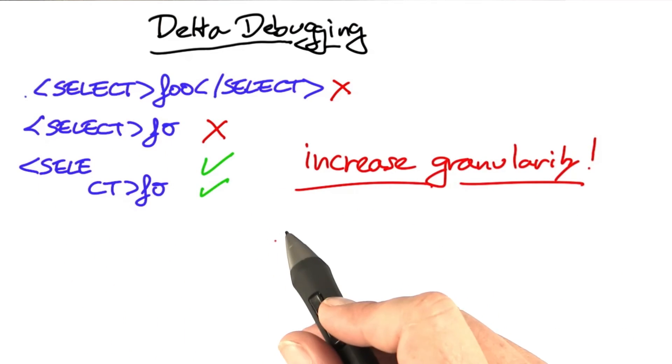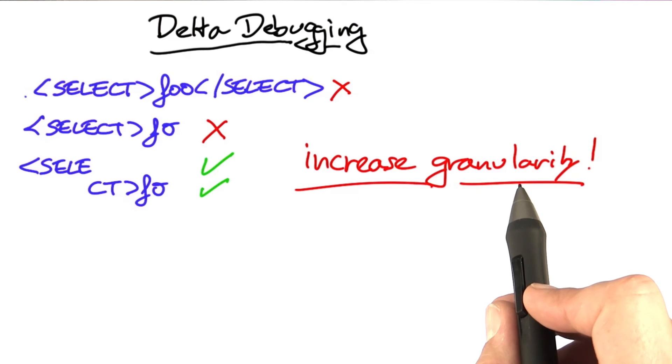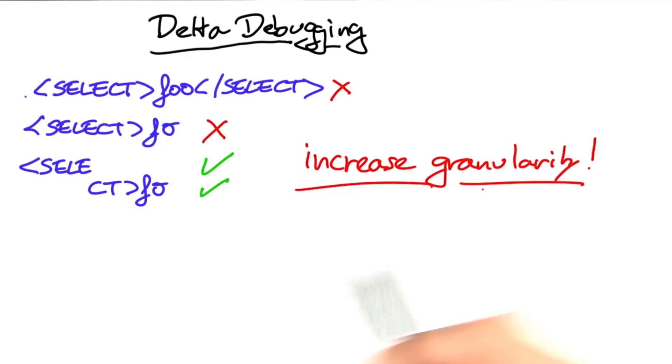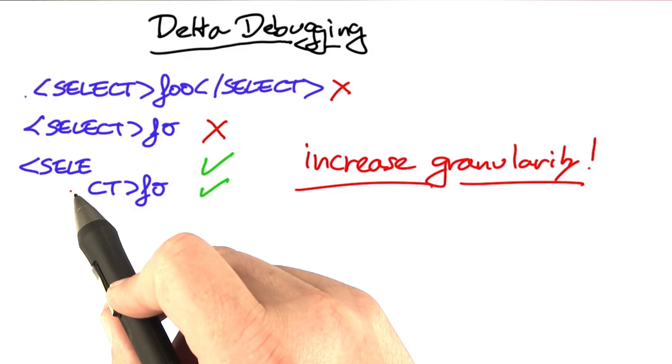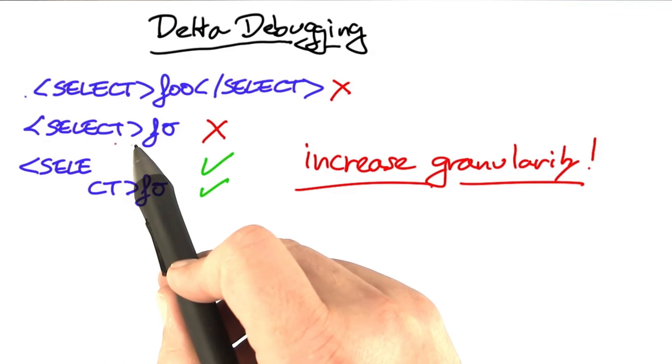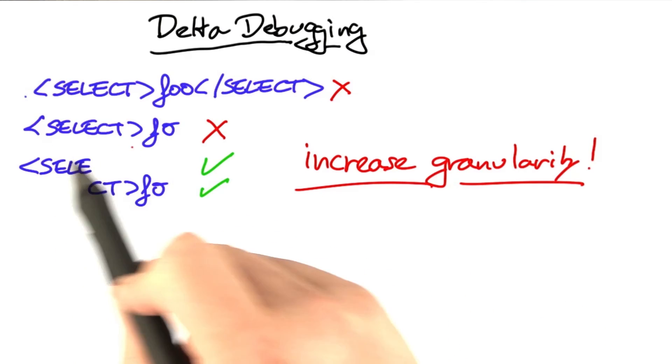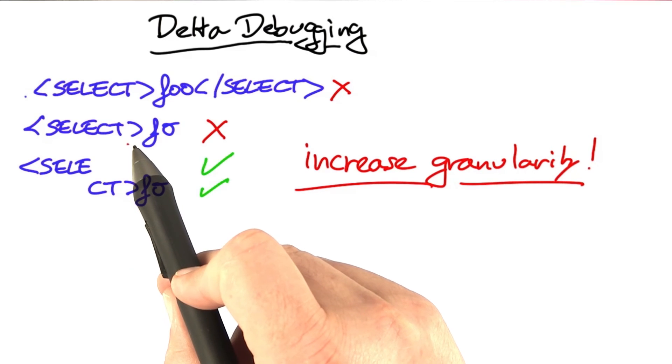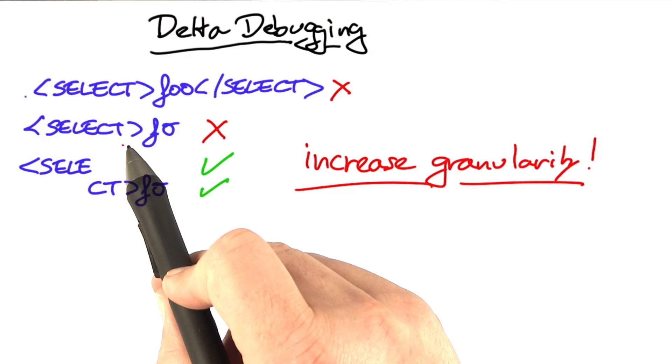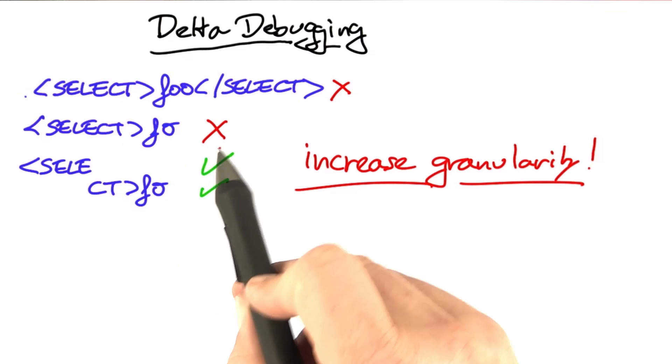What we do in this situation is we increase the granularity. That is, we take away smaller parts more frequently until we end up removing single characters such that we really get an input where every single character or every single part is relevant for reproducing the failure.